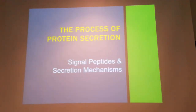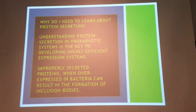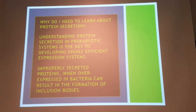Once a protein is produced — whether in a eukaryotic or bacterial system — it has to be targeted to a specific tissue, and this is achieved via signal peptides. Signal peptides are generally located at the amino-terminal end of the protein. For example, a protein produced in the liver that needs to be transported to the kidney will have an associated signal peptide, allowing it to pass through the circulatory system to the target tissue, where it is then cleaved.